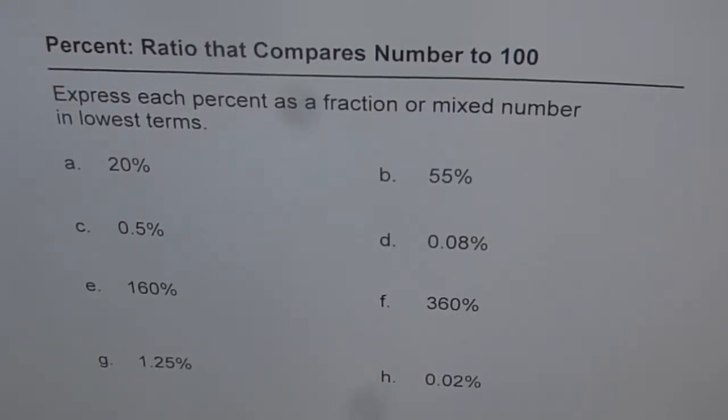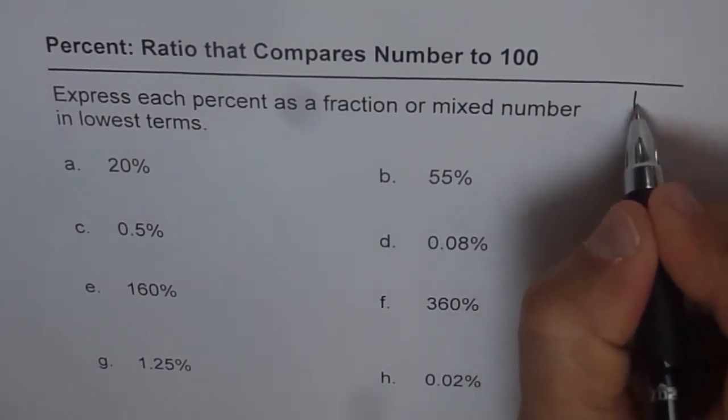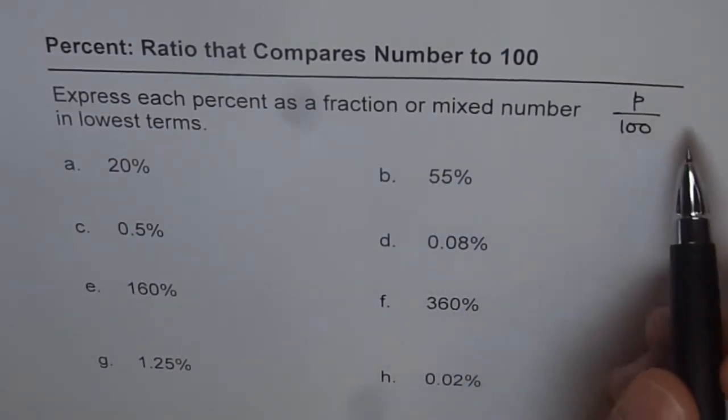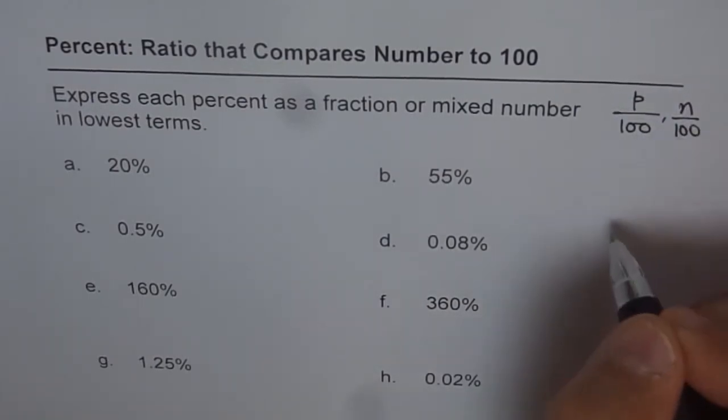Percent - a ratio that compares a number to 100. That is how we understand percent. If I say something is 10%, that means 10 over 100. Something is 5%, 5 over 100. Something is P%, that means P over 100. Now if I say P over 100, that means P%. If I say N over 100, in general, N percent.